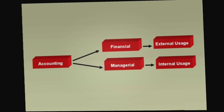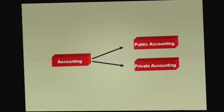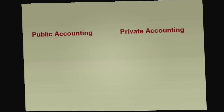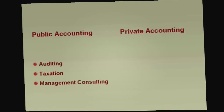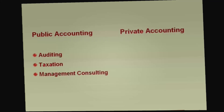From a work perspective, accounting can also be classified into two categories: Public Accounting and Private Accounting. Public Accounting mainly relates to the work of auditors — they do auditing, provide advice on tax, and also act as management consultants. Prior to the Enron fiasco, an auditor could do all three. Now they can only do one. If they do auditing, they can't do consultancy, and if they do consultancy, they can't do auditing.